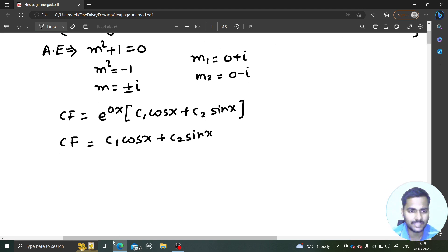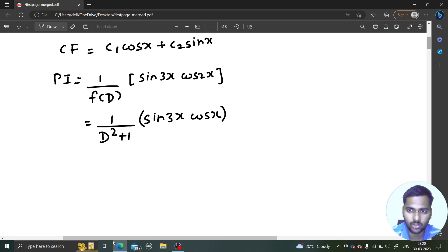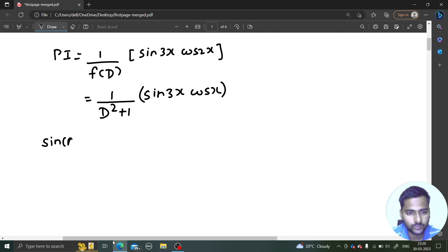Your complementary function is e^(0x)[c₁cos(x) + c₂sin(x)], so CF will be simply c₁cos(x) + c₂sin(x). Moving forward to the particular integral which is 1/(D²+1) operating on sin(3x)cos(2x). Because this is not a known form to us, we will have to change it using some basic trigonometry.